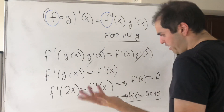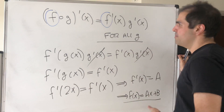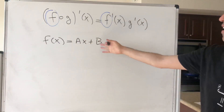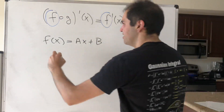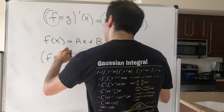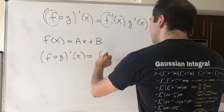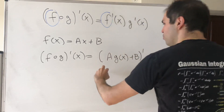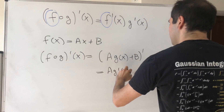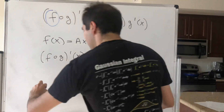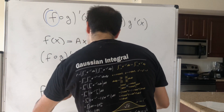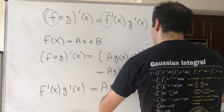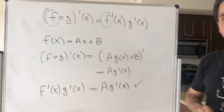So the only functions for which this is true for every g are the linear functions. Let's verify this. If f is linear, then the left-hand side, f composed with g, prime of x, equals (a·g(x) + b)' which is a·g prime of x. On the other hand, f prime of x times g prime of x equals the derivative of ax plus b, which is a, times g prime of x — also a·g prime of x. So indeed, it is true.